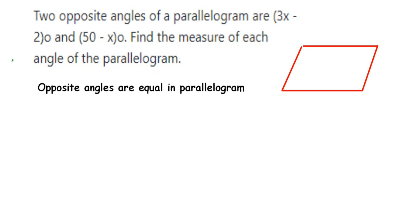Here, 3x - 2 will be equal to 50 - x because opposite angles are equal. I'm going to first find the value of x, so transpose x to the other side and 2 to this side.